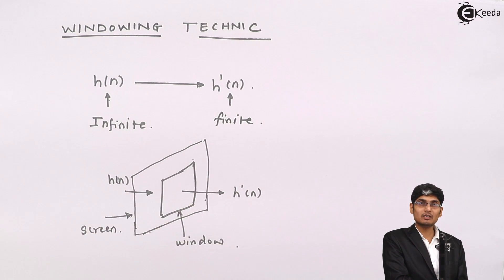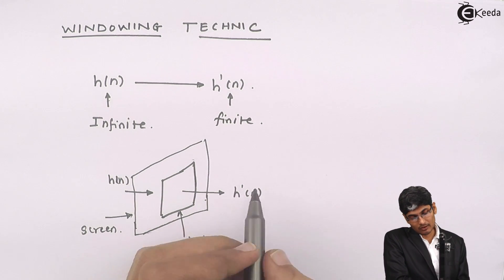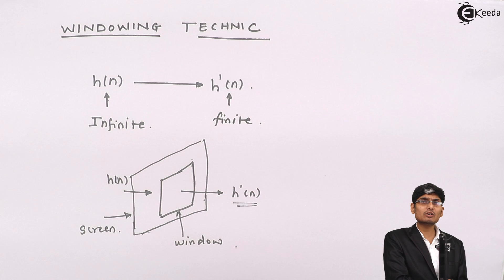There are infinite samples coming in, but only some samples are going through the window. In that way we make the h of n as finite. Because we are using this technique of filtering the h of n samples, the name of the technique is also given as the windowing technique.